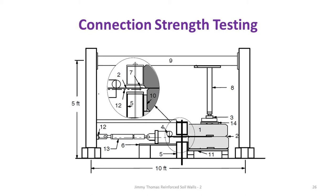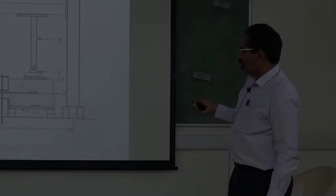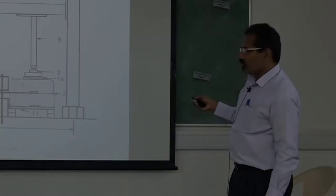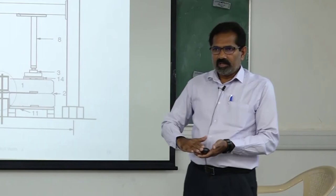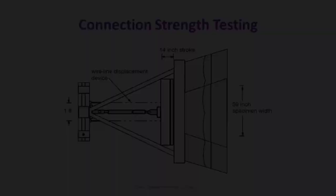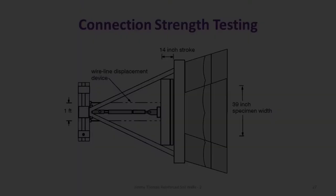In connection strength testing, we simulate the system in the laboratory. We have the same exact blocks, then put the geosynthetic between them using whatever type — whether it is a frictional connection, aggregate, or concrete — exact same thing. Then we restrain the blocks while pulling so the block should not move. We can apply the normal force because depending on the height of the wall the normal force will vary, then try to pull it out and measure the elongations and the force. This shows the plan view.